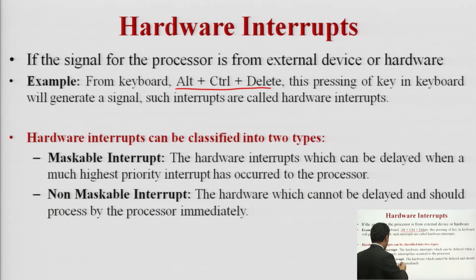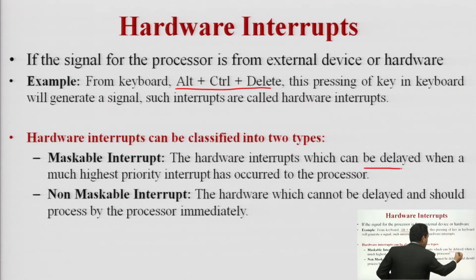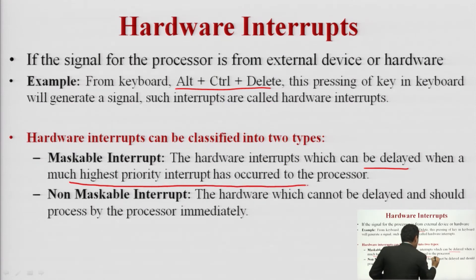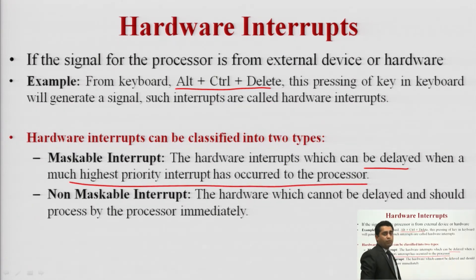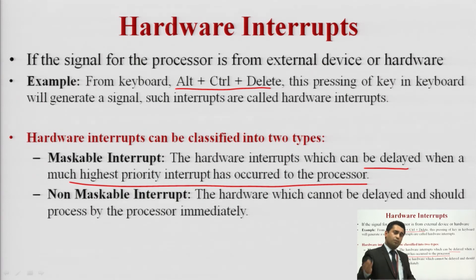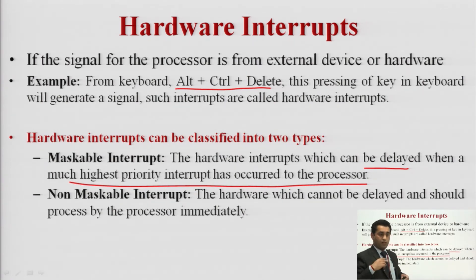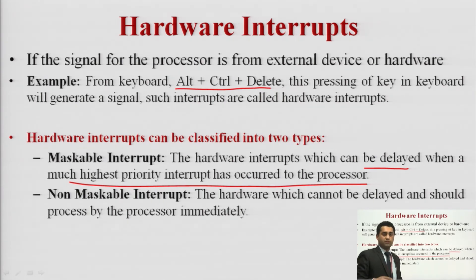A maskable interrupt is a hardware interrupt that can be delayed when a higher-priority interrupt occurs — the CPU is assigned to the higher-priority one, meaning interrupt over interrupt. Non-maskable means: if an interrupt is already running and another interrupt arrives, it says 'no, I am also an interrupt and I will not allow you.' This is a non-maskable interrupt.